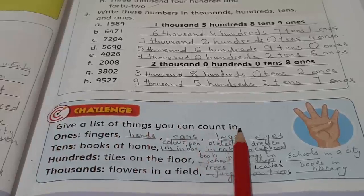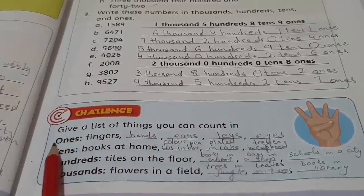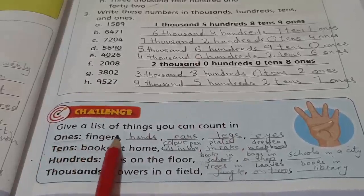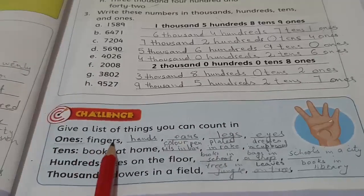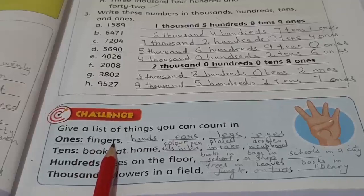9527 - nine thousand, five hundred, two tens, seven ones. Now you can see on page number, there is a challenge given to you. We have to solve them according to the column. Give a list of things you can count in.